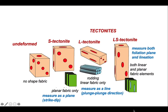In terms of measuring these: the schistosity, a planar fabric, can be measured as a plane — so we'll have a strike and a dip. A linear fabric will be measured as a line — so it would have a plunge and a plunge direction. And for an LS-tectonite, well, you'd measure both.